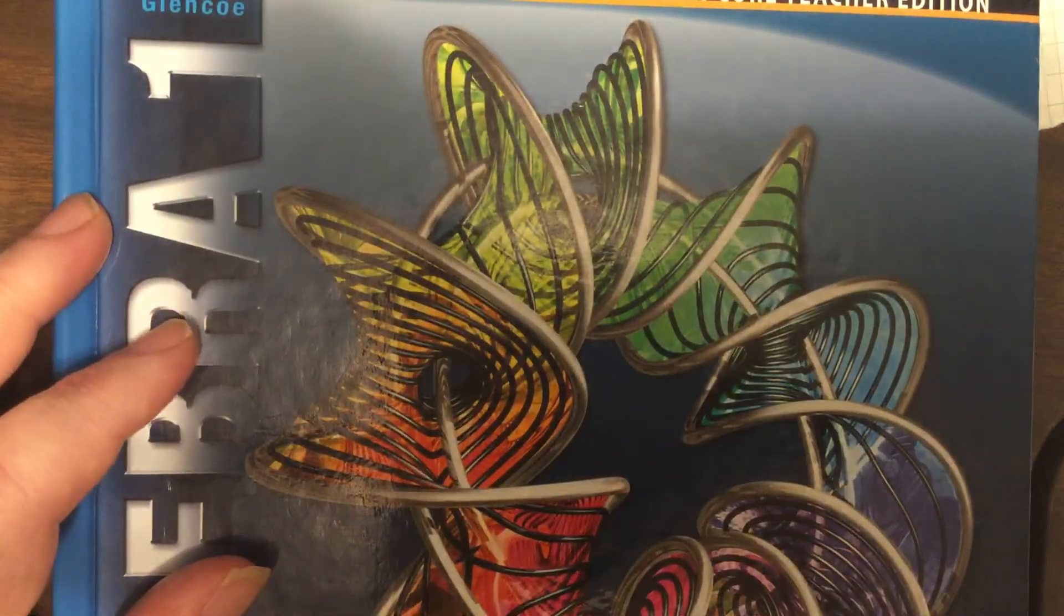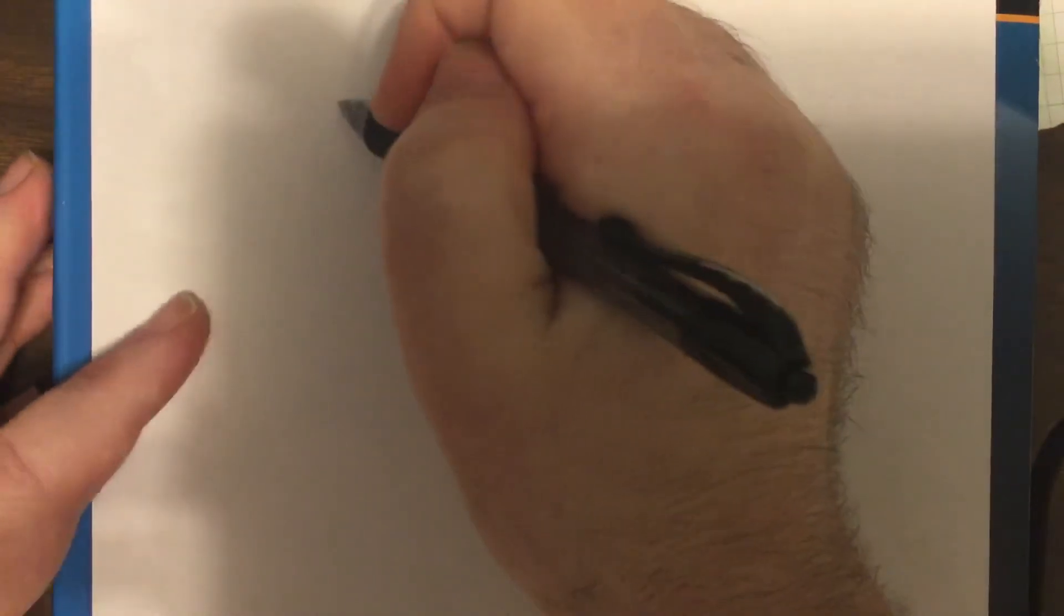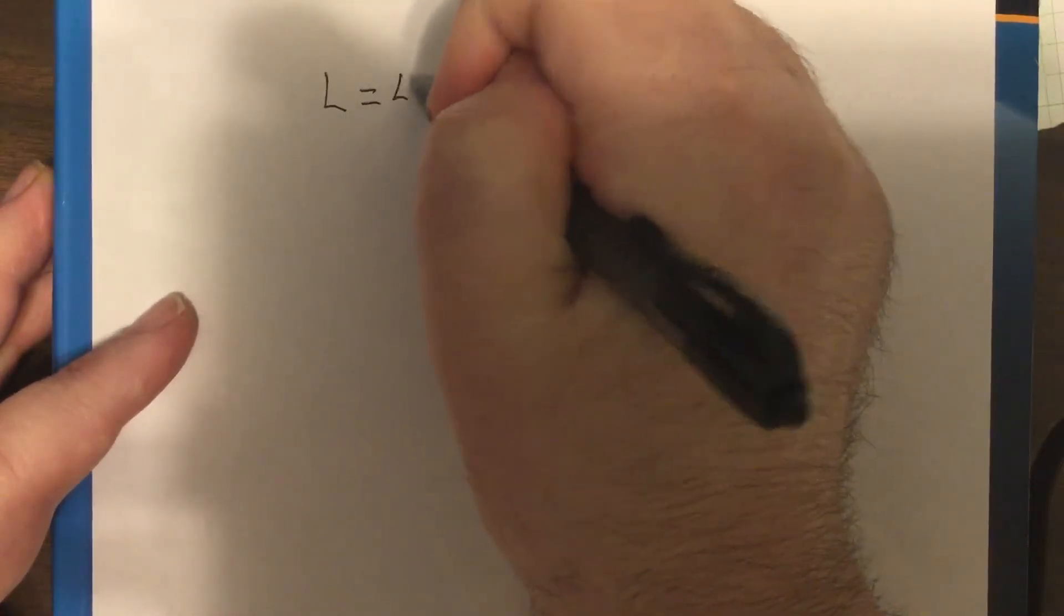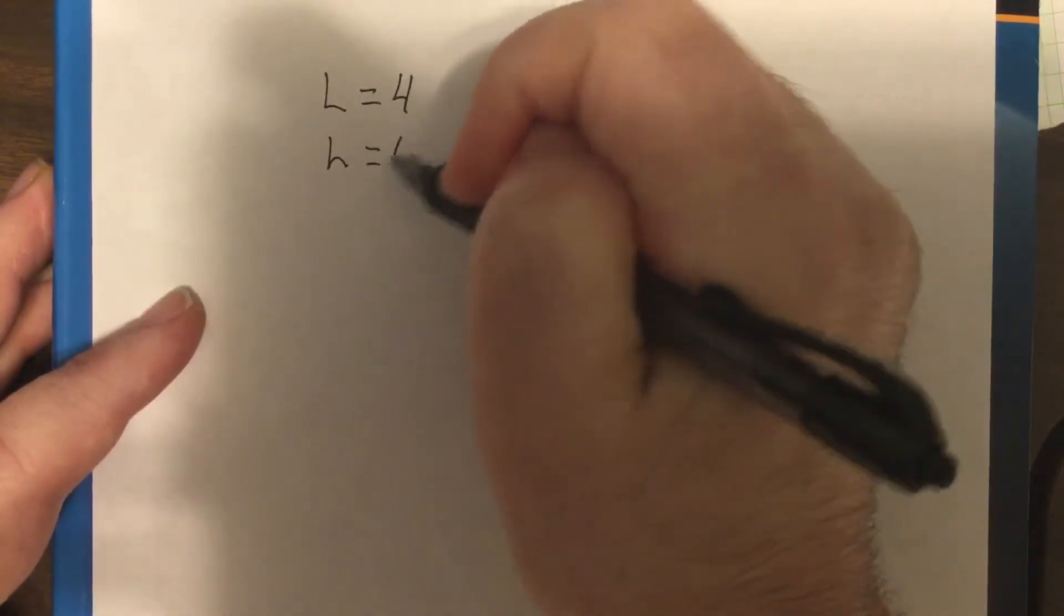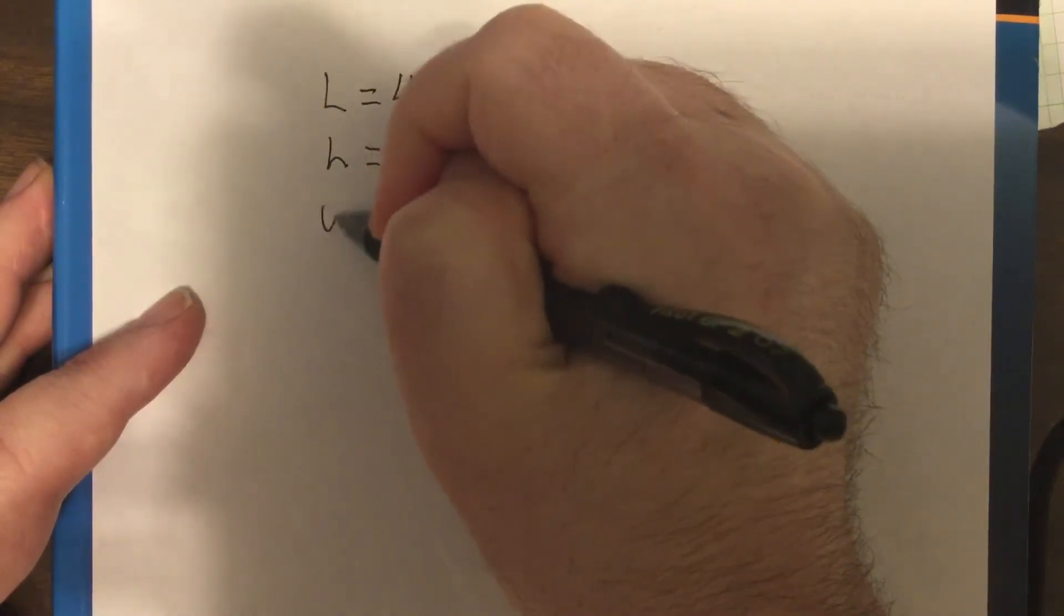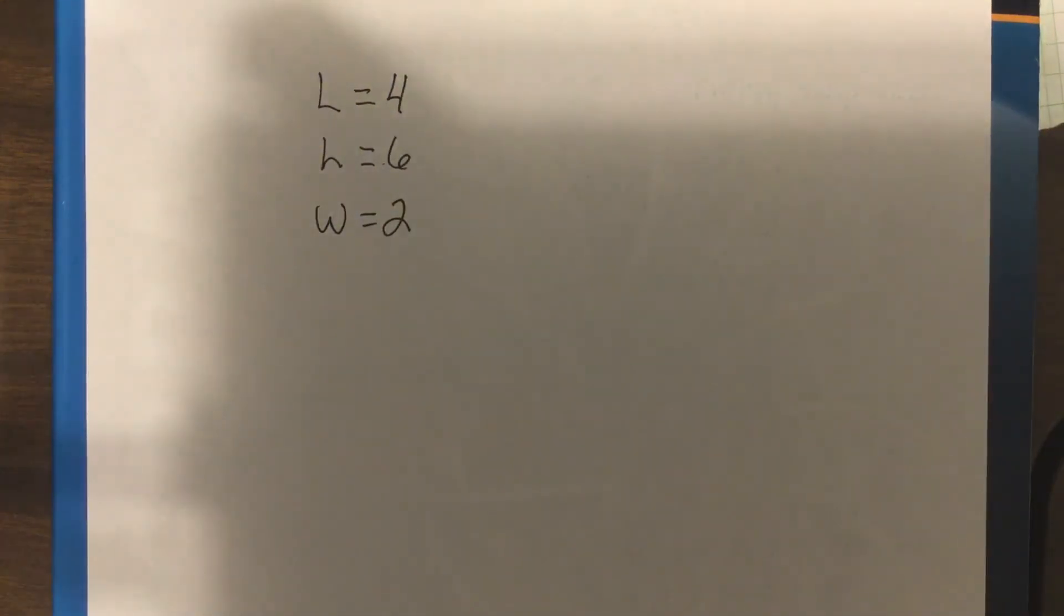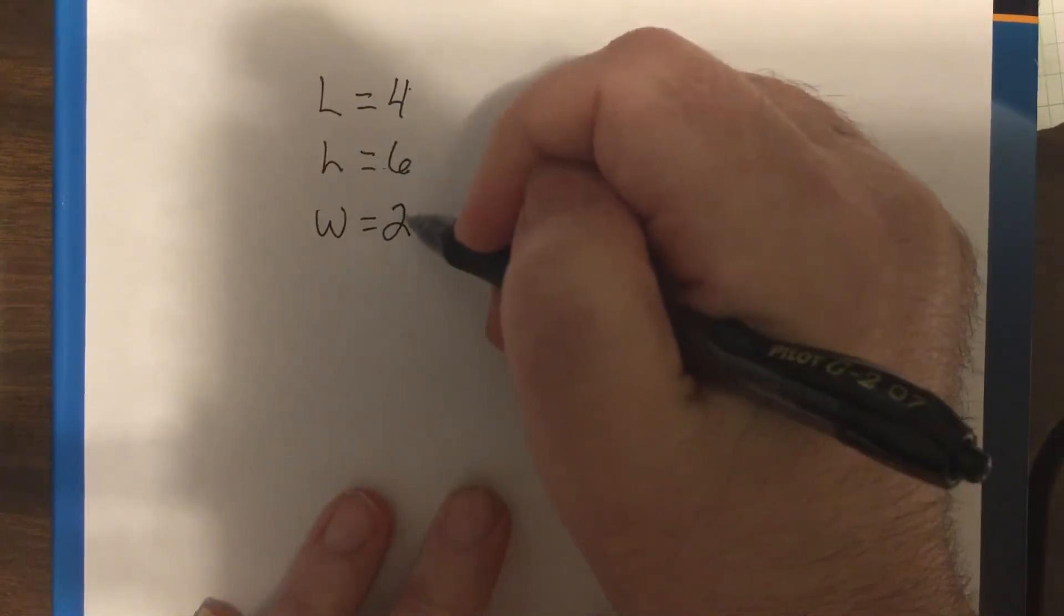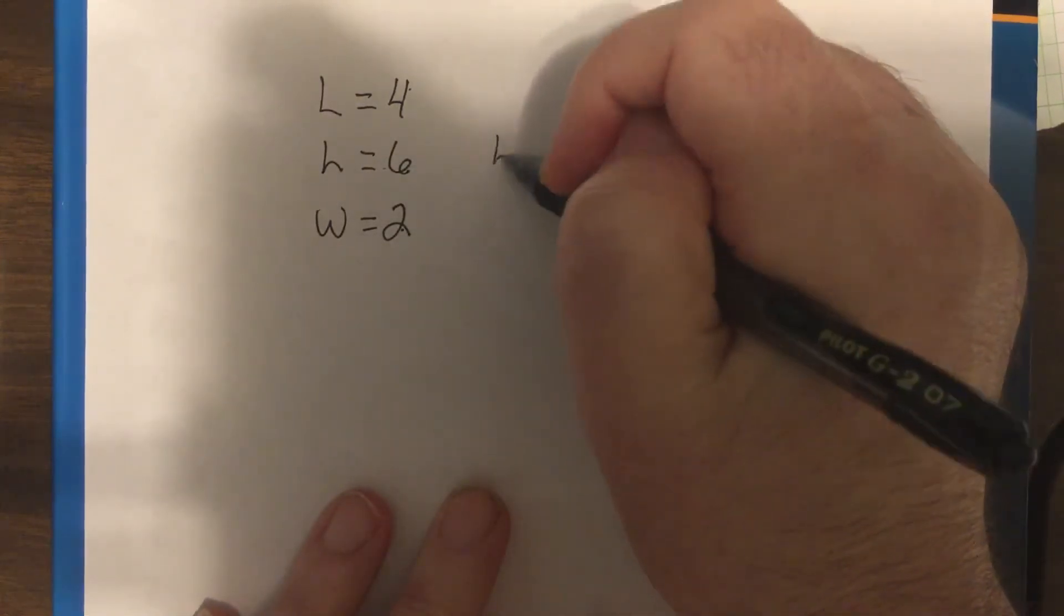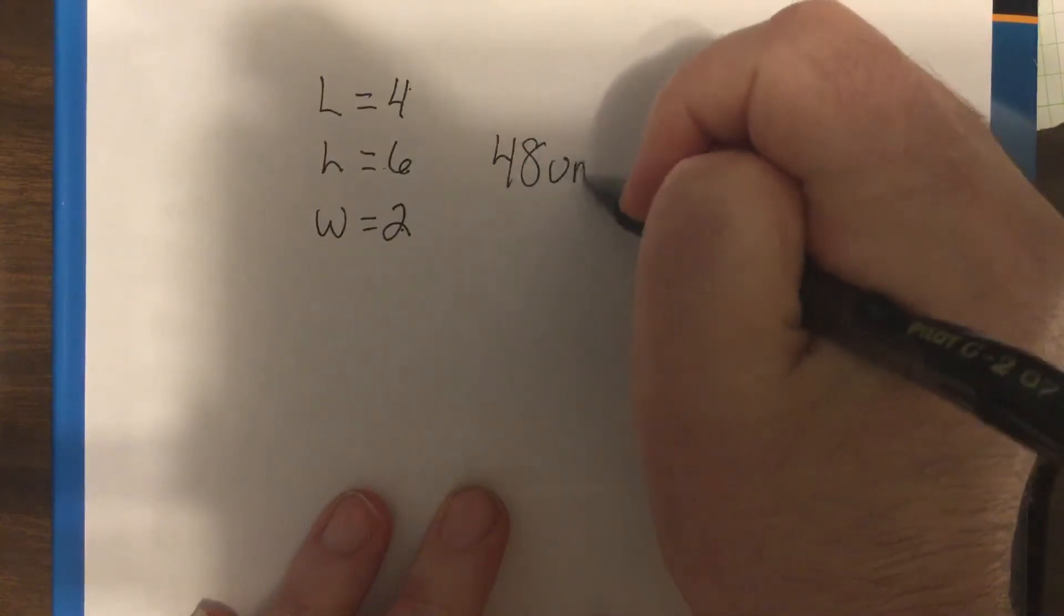So let's say you have a rectangular prism where the length is 4, the height is 6, and the width is 2. What would the volume be? Figure it out. Okay, so 4 times 6 is 24, times 2 would be 48 units cubed.